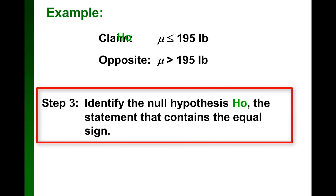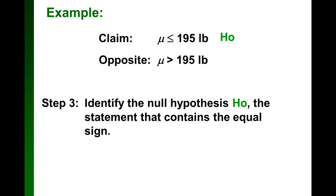The next step is to identify the null hypothesis. It's easy to do that if you simply look for the equal sign. The statement that has the equal sign is the null hypothesis, and we denote it with H subscript 0.